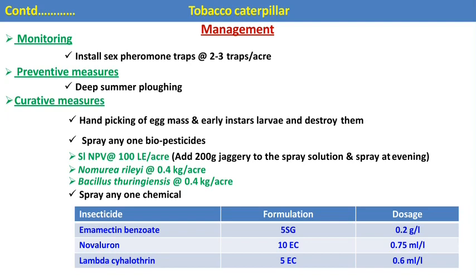For monitoring the tobacco caterpillar, install sex pheromone traps at the rate of 2–3 traps per acre. Deep summer ploughing should be followed to expose pupae present in the soil to sunlight, which are then picked up by birds. For curative control, at an initial condition, collect the different egg masses and early instar larvae and destroy them.